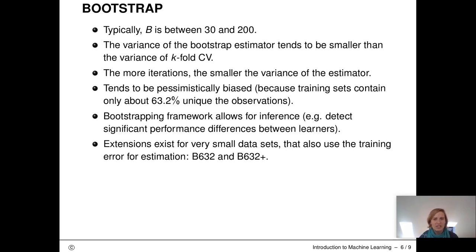As in cross-validation and in holdout splitting, we get a pessimistically biased estimator. In bootstrap, we also just use a subset of the data as we do in cross-validation and holdout splitting. On average, it's 63.2 percent. And this is also the reason why we get the pessimistically biased estimator. One really nice thing about the bootstrapping framework is that it allows us to do inference as well. We can, for example, calculate if there is a significant performance difference between learners or models.